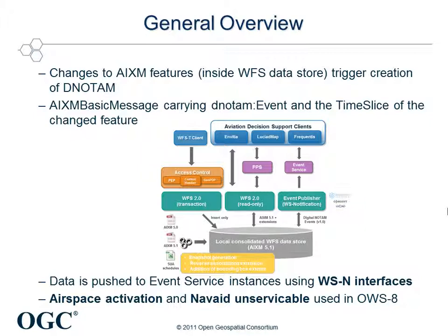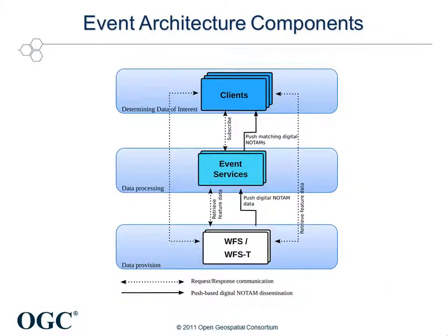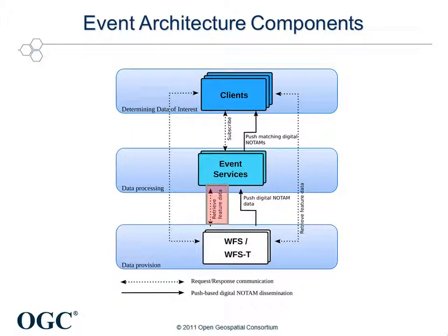Once an event has been generated, it is pushed to the event service automatically. Similar to former testbeds of OWS 6 and 7, the clients subscribe in a first step for a well-defined set of events. Triggered by the change of an AXM feature, the WFS datastores send a notification about the change to the event service. In a next optional step, the event service can pull unchanged information for the corresponding feature to be able to perform complex filter operations. The D-NOTEM is then checked against the filter of every registered subscription, and if the filter matches, the original D-NOTEM is pushed to the client.